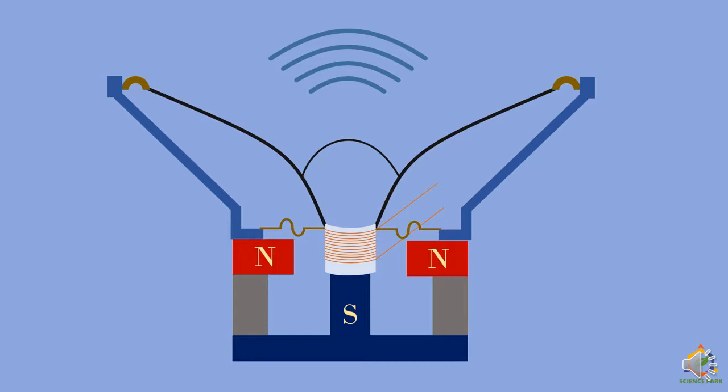The electrical signal to the speaker comes from a device called an amplifier. The input to the amplifier is provided by an instrument such as a music player or a microphone. In the microphone, sound energy is converted into electrical energy; the amplifier increases the amplitude of that signal and sends it to the speaker, from which we can hear the sound.